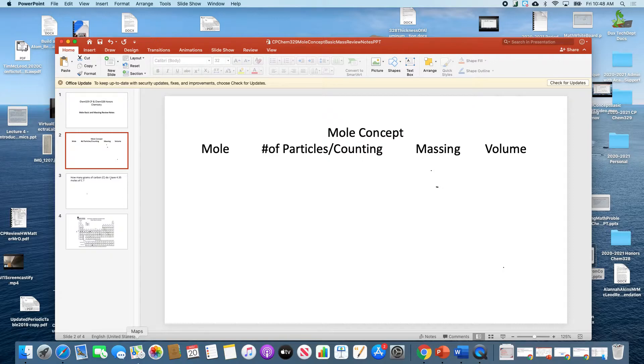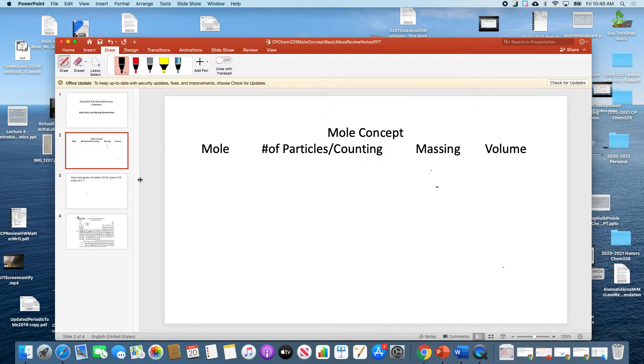So today, the concept is called the mole, and it's the concept in chemistry. It allows us to count, mass, and find the volumes of groups of things when we can't count them individually. And it works on the following: that the group size that we have to get so that we can actually mass things out is 6.02 times 10 to the 23rd. And that is actually called Avogadro's number, in honor of Avogadro, who basically was the first to come up with a hypothesis that this is occurring.